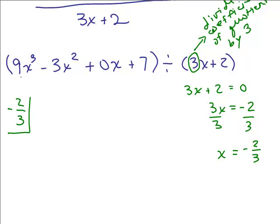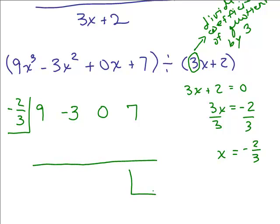We have 9x cubed minus 3x squared plus 0x plus 7, so we write the coefficients in order: the coefficient of x cubed, x squared, x, and the constant. Since we have something to the third power, there will be 4 numbers. We draw our line, and the number below the line at the end will be our remainder.